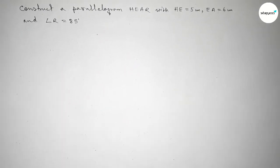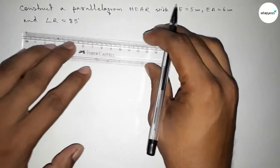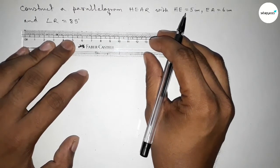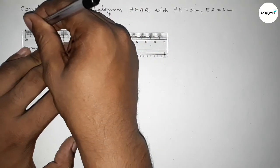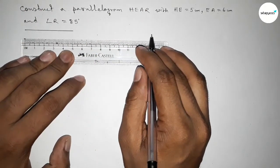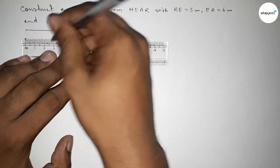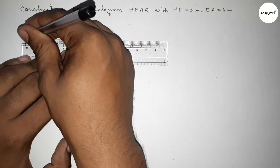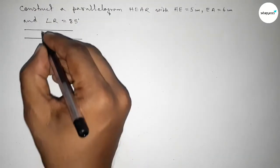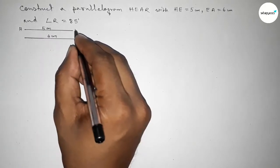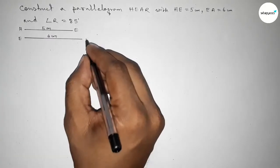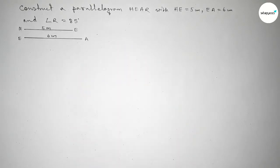So let's start the video. First of all we have to draw the given two lines. First drawing a line of length 5 centimeter, then drawing another line of length 6 centimeter. So this one is 5 centimeter and this one is 6 centimeter, and these lines are HE and EA.